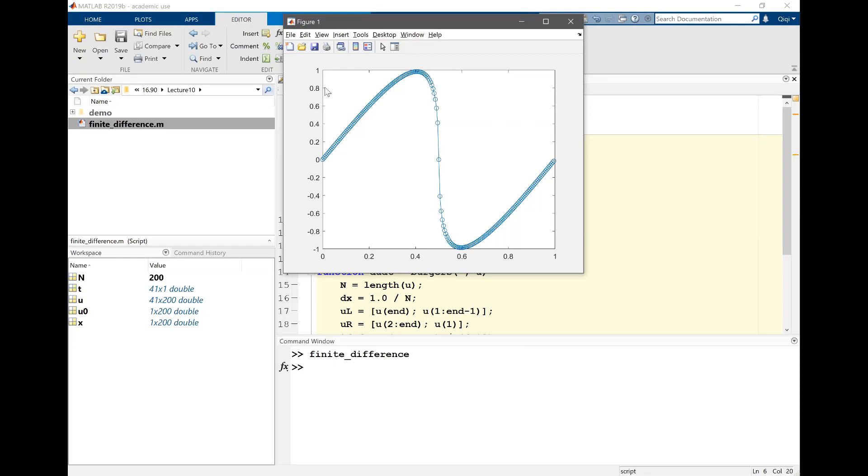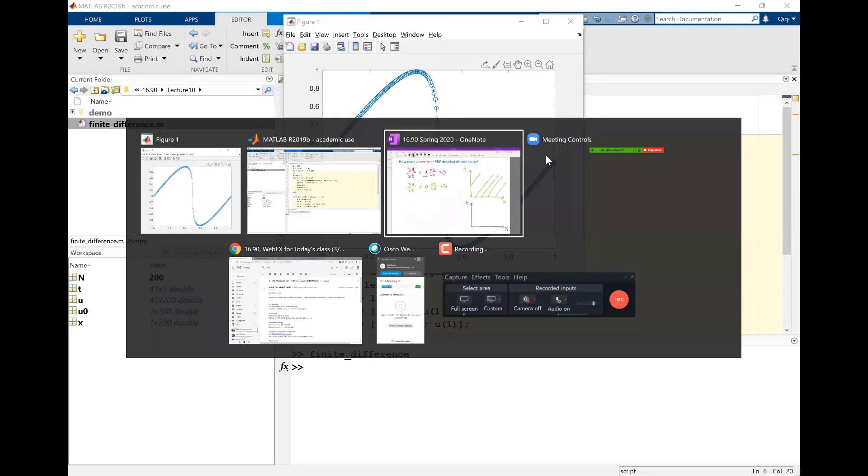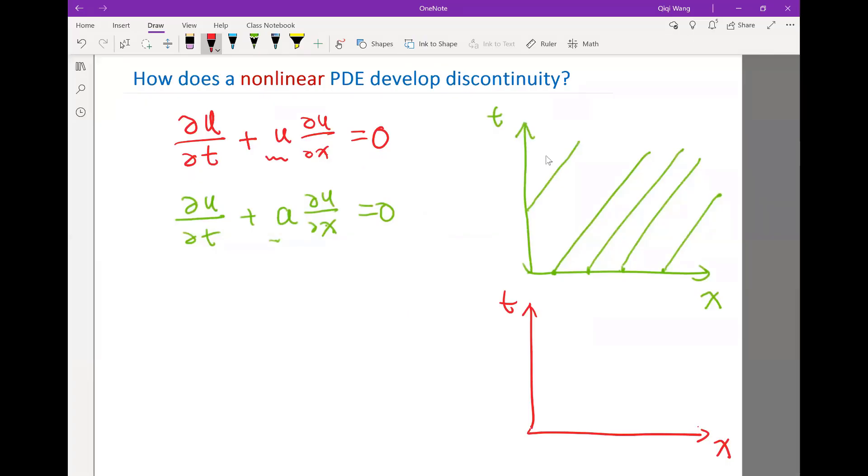So now you've seen how the solution evolves from initial sinusoidal wave to a solution like this. Going back to our x and t diagram, basically when t is equal to zero, the contour would be something like this, right? The solution would be zero.